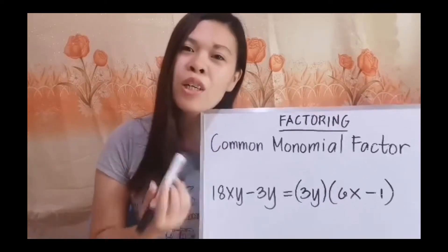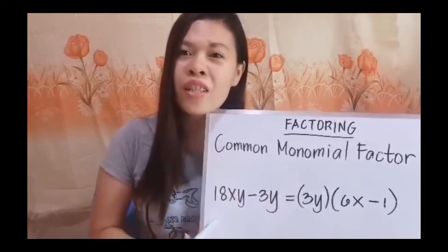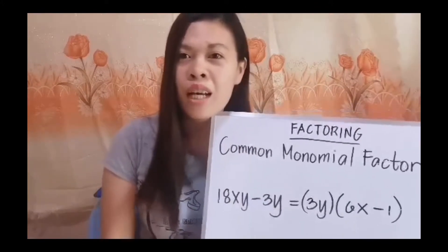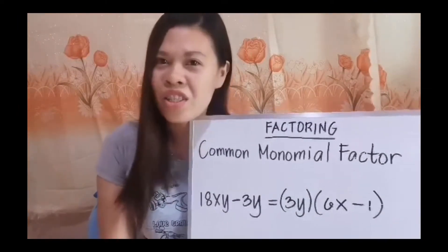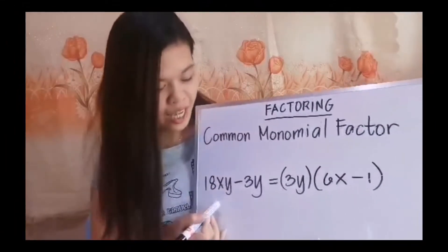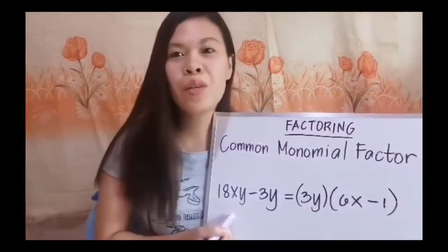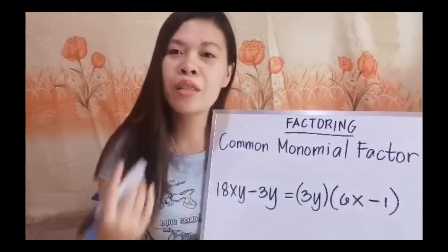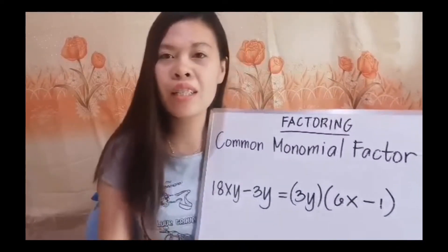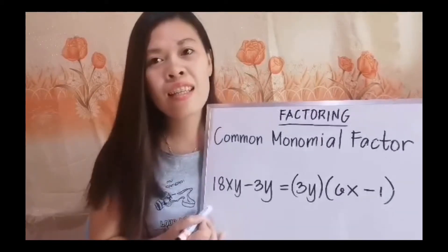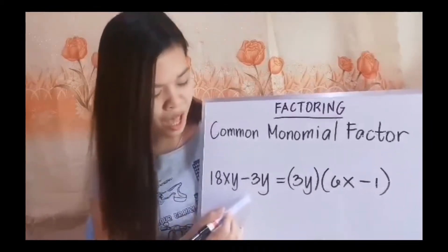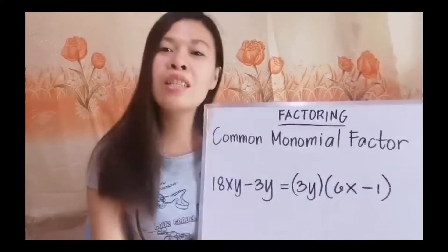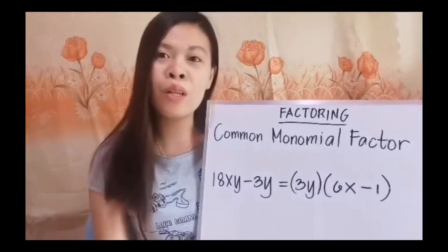What are the steps in getting the factors of a polynomial by getting the common monomial factor? Let us recall the previous factoring techniques. Do you think this is a simple trinomial? Let us evaluate. How many terms do we have? We have the first term and the second term, so meaning to say it cannot be a simple trinomial.